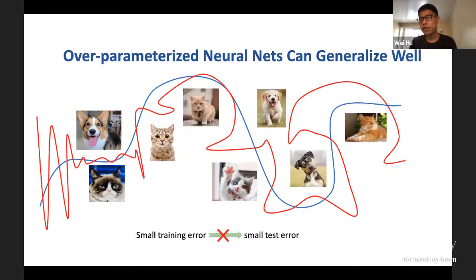That means even if we successfully solve the optimization problem and get small training error, that doesn't imply we will have generalization, we will have small test error, because in principle we don't know whether we found the blue solution or the red solution if we just look at the training error. But in practice, just by minimizing the training loss using gradient descent-like algorithms, we can somehow often find solutions that generalize well to test samples. And this is the mystery that's not well understood.